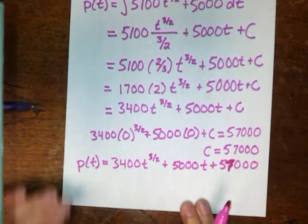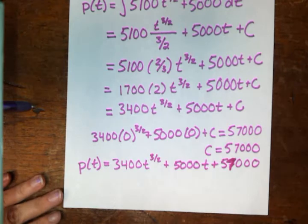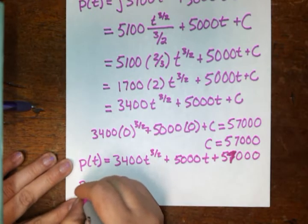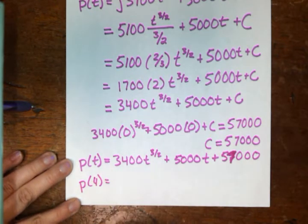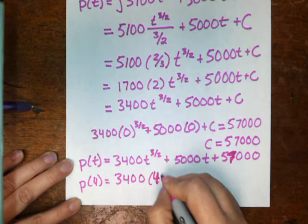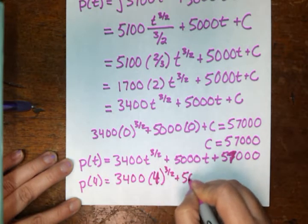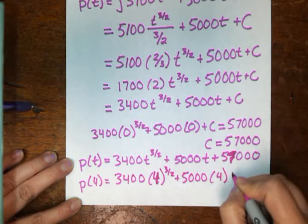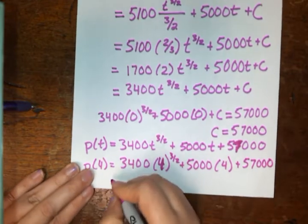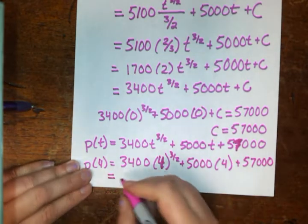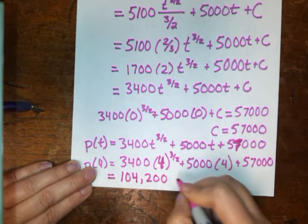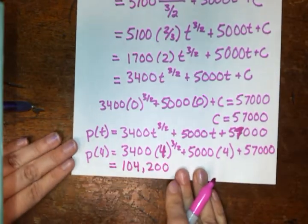I will get through this. So we've got p of t, but the question's not asking for p of t. They don't want that function. They want to know what p of 4 is. Well, you guys know how to find p of 4. You're just going to plug in a 4 everywhere there's a t. So 3,400 times 4 to the three-halves plus 5,000 times 4 plus 57,000. And if you plug all of that goodness into your calculator, you will find out that your answer is going to be 104,200 people. And that's p of 4. And that's the answer that they're looking for.